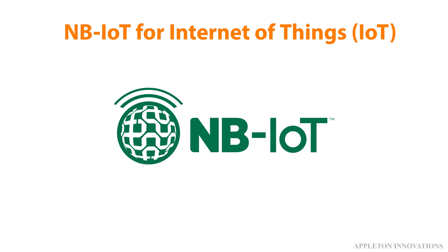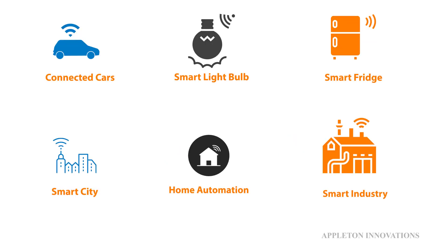In this lesson we learn about narrowband internet of things, NB-IoT, a wireless cellular communication technology for the internet of things. IoT is all about interconnected cars, lamps, fridges, smart cities, home automation, industry, and more. But when we want to connect small things over long periods in hard-to-reach places, what is the solution?